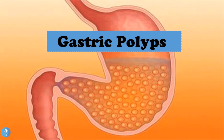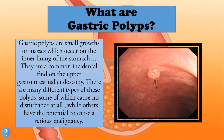Welcome to How to Gastro. In today's video we will be talking about gastric polyps. Gastric polyps are small growths or masses which occur on the inner lining of the stomach. They are a common incidental find on upper GI endoscopy and there are many different types — some cause no disturbance at all while others have the potential to cause a serious malignancy.